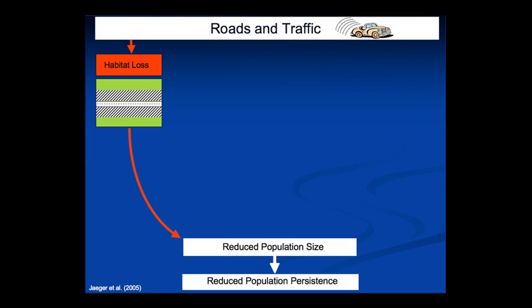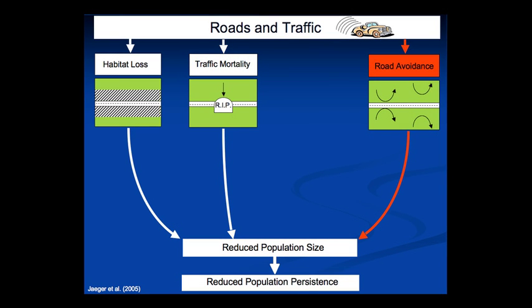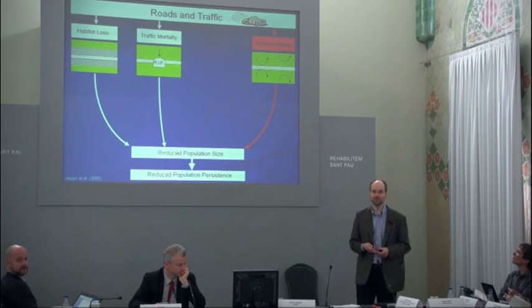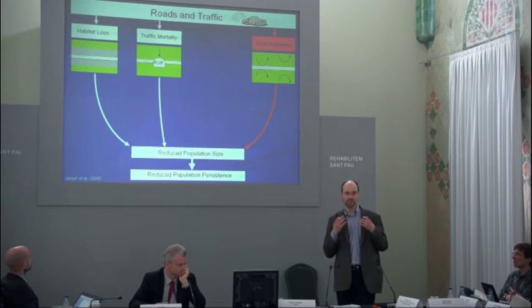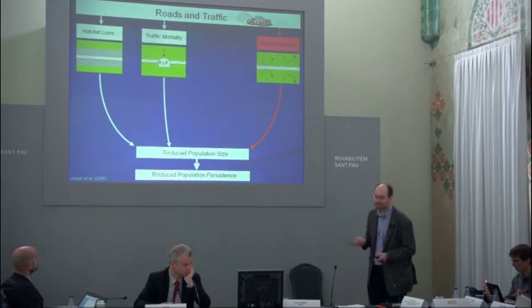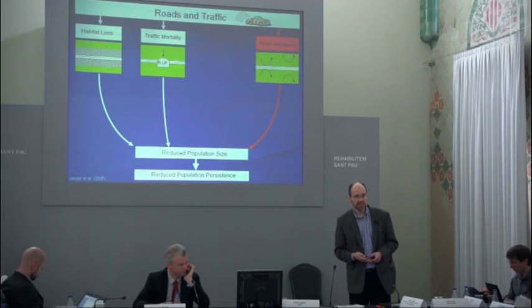What are the mechanisms by which roads and traffic affect wildlife populations? There are four major effects. First, habitat loss — Richard Forman has published extensively on the 'road effect zone,' because habitat loss extends beyond the road surface to include noise, light, and other impacts. Second, traffic mortality. Third, road avoidance or barrier effect: animals may be unable to cross fenced roads, or may avoid roads they perceive as risky. All these processes are detrimental and reduce population size and persistence probability.